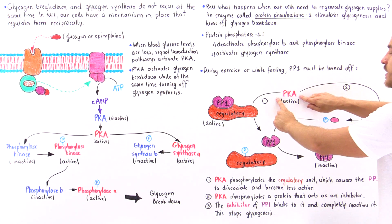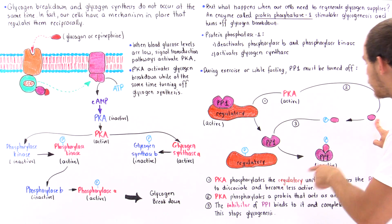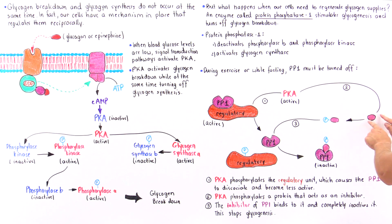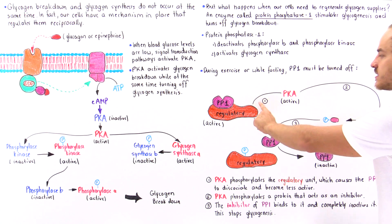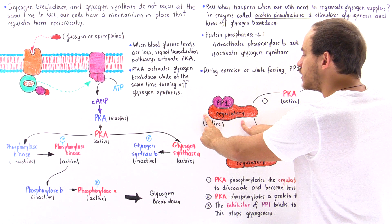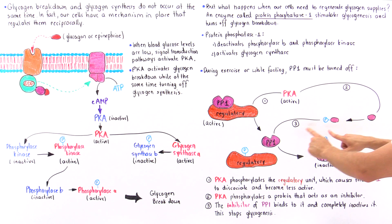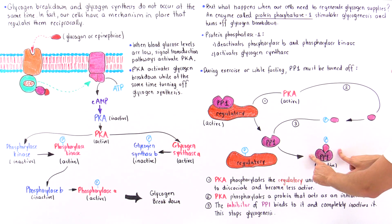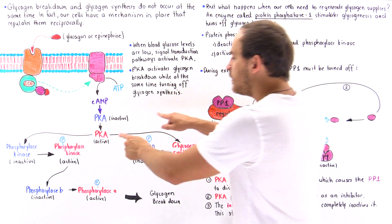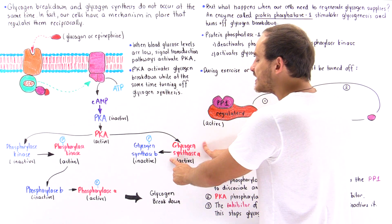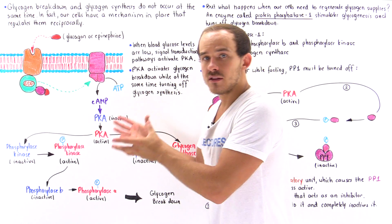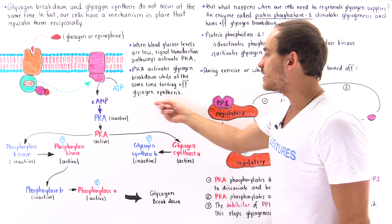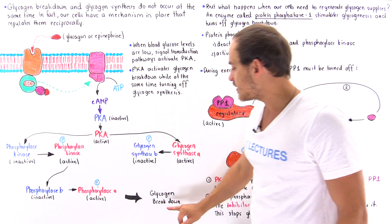At the same time, PKA also phosphorylates an inhibitory protein molecule. In its unphosphorylated form this inhibitory protein is not attracted to PP1, but once phosphorylated it binds onto protein phosphatase 1. Once the regulatory subunit has dissociated and the phosphorylated inhibitory molecule has bound, PP1 is put into the fully inactive form. So PKA not only inactivates glycogen synthase A — it also inactivates PP1, ensuring glycogen synthesis is turned off while glycogen breakdown is turned on.